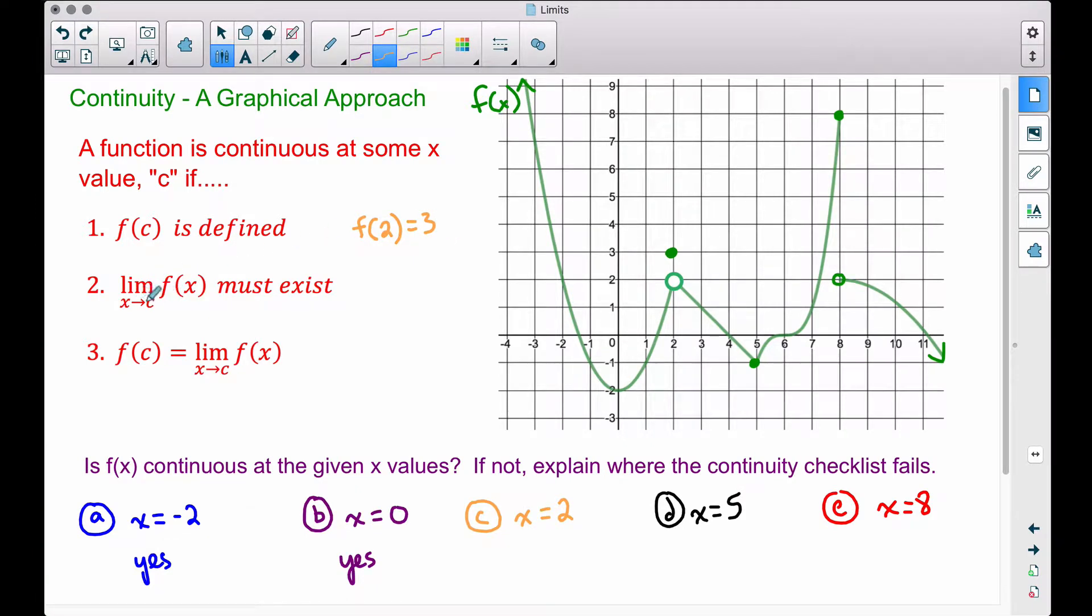Does the function exist as x approaches 2? From earlier videos, we talked about a left handed limit and a right handed limit. If the left handed limit is equal to the right handed limit, the limit does exist.